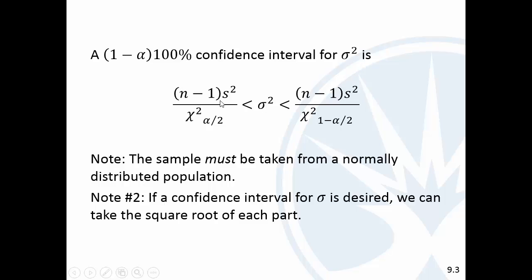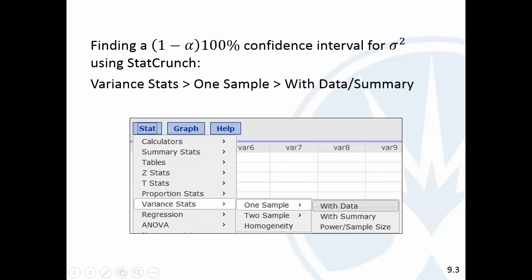You'll notice that this is a confidence interval for sigma squared. StatCrunch just gives you the output here—it gives you that sigma squared, the variance, is between these two values. If you want a confidence interval for the standard deviation, you just take the square root of all of that. So in StatCrunch, same idea—now we're doing variance stats with one sample, either with data or with the summary.